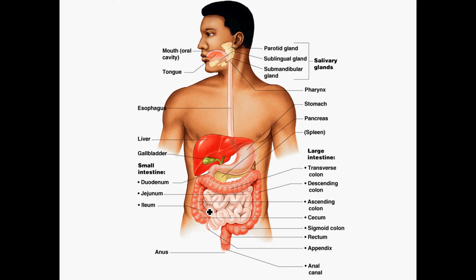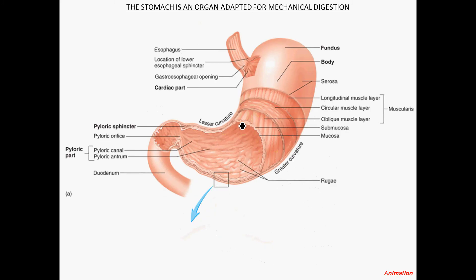Here we are with the entire digestive system. We've already dealt with the mouth, oral cavity, and the propulsion of food boluses down the esophagus, and now we'll be focusing on what's happening in the stomach region. Here's the stomach — it's sometimes described as a J-shaped organ. It has a lesser curvature and a greater curvature around the left and inferior sides of the stomach.